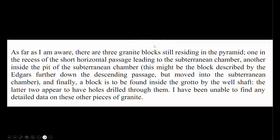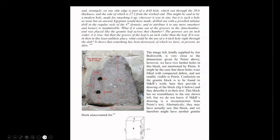Another granite block is inside the pit of the subterranean chamber — this might be the block described by the Edgars further down the descending passage, but moved into the subterranean chamber. And finally, a block is to be found inside the grotto by the well shaft. The latter two appear to have holes drilled through them. The second of the three chunks of granite is located in the pit and does have holes drilled into it, similar to the red granite slab discovered on the outside of the pyramid.